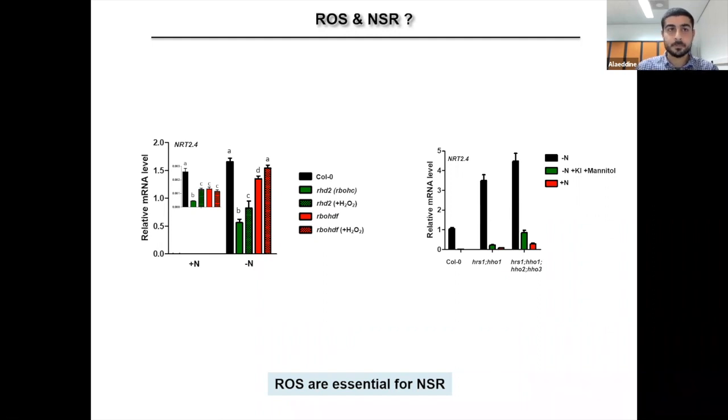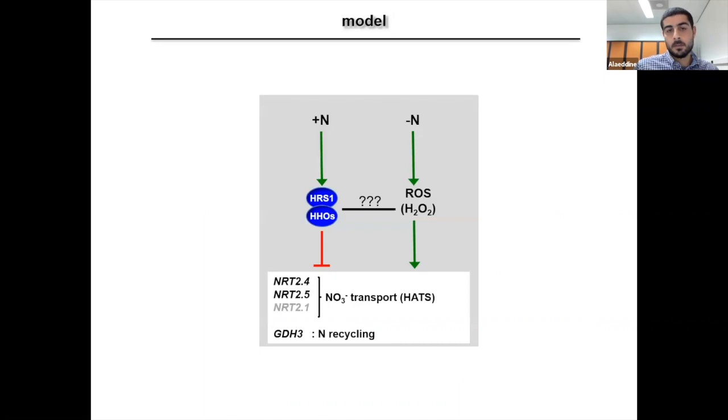On the left side, you can see here that the quadruple mutant phenotype is also severely affected by ROS scavenging treatment. So taken together, all these data suggests that ROS are essential for the establishment of nitrogen starvation response. So to summarize, at minus N, ROS are produced and needed for the NSR establishment. Then when we apply nitrogen, HHOs are rapidly induced to directly repress this response.